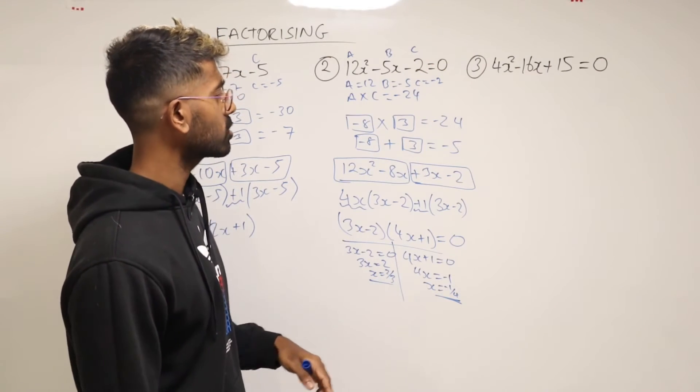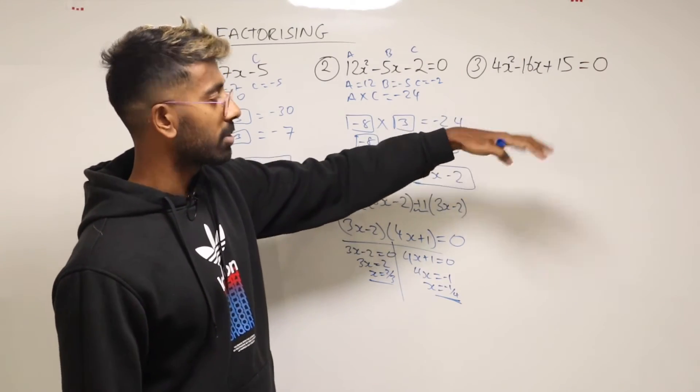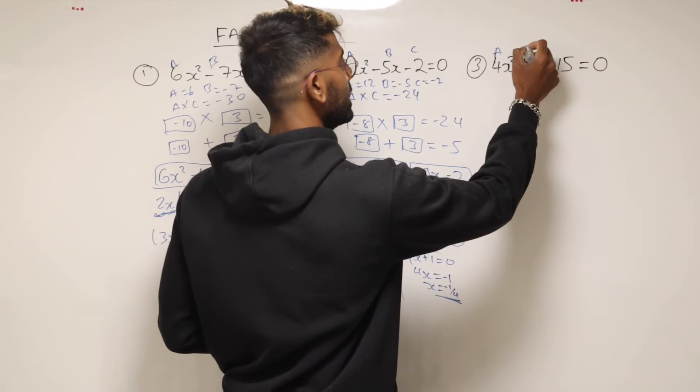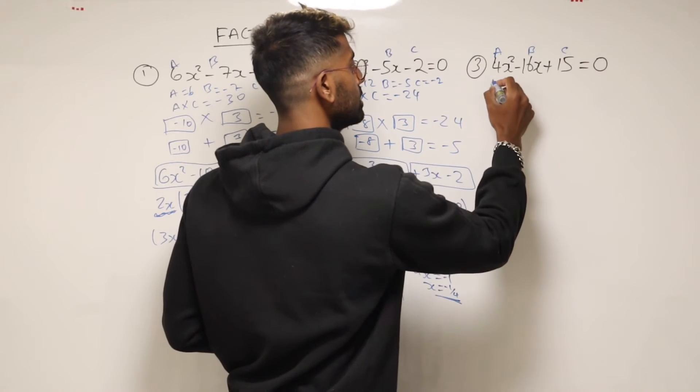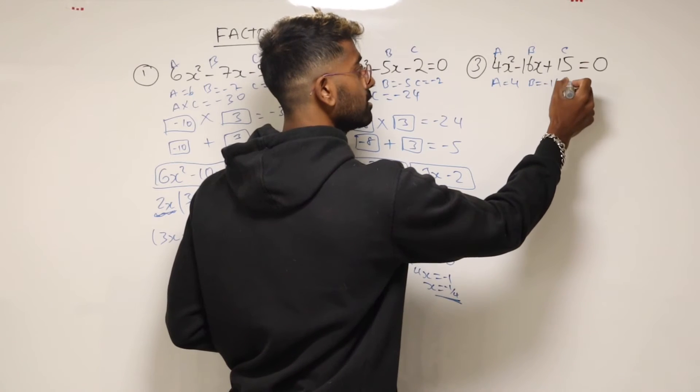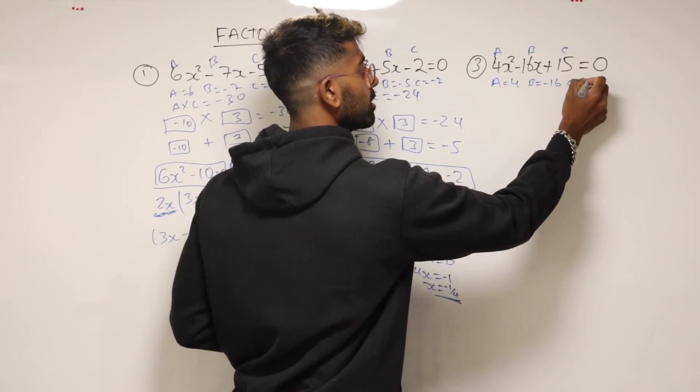Now let's just factorize the last one. And again, I put it equal to zero because we're going to go and solve it. So we've got a, b, and c. a is equal to 4, b is equal to minus 16, and c is equal to 15.